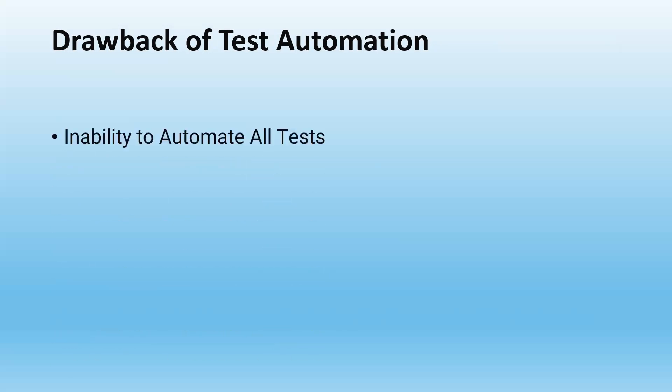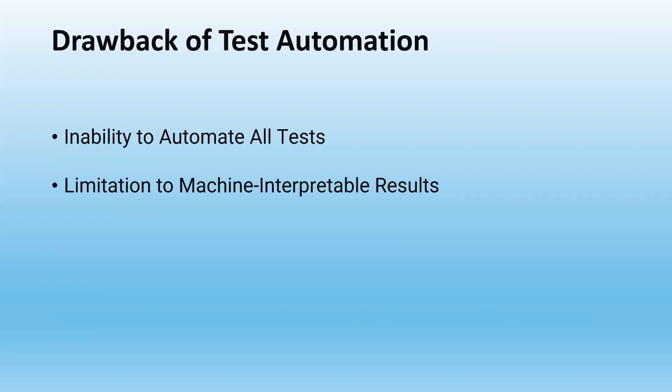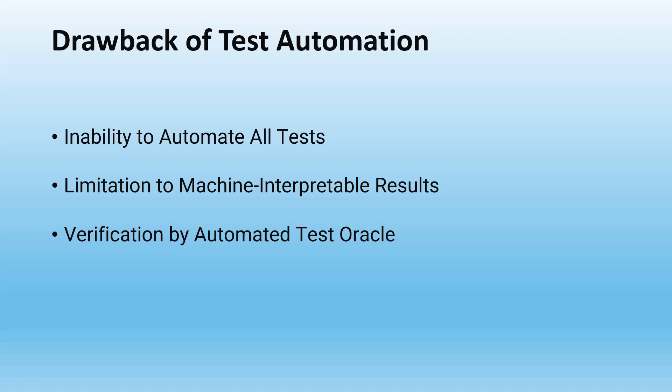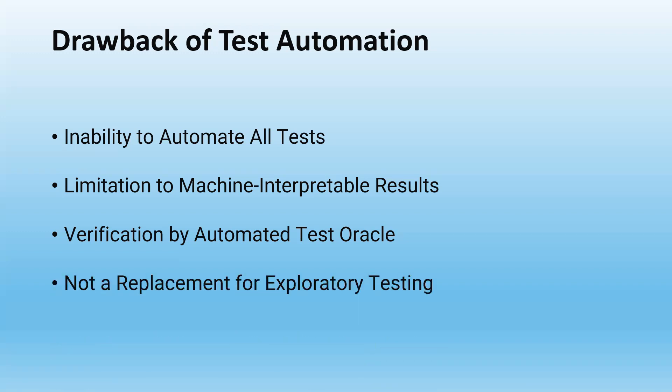Let's look at the drawbacks of test automation. Are there any drawbacks? Yes. The first is the inability to automate all tests — we cannot automate everything. There are some scenarios we cannot automate because we are only automating things that can be interpreted by the computer. The other drawback is the limitation to machine-interpretable results. When verifying results, we also have to define the expected outcome, and if there are any other outcomes we may have issues verifying them. Also, test automation is not a replacement for exploratory testing — it is a replacement for repetitive tests.